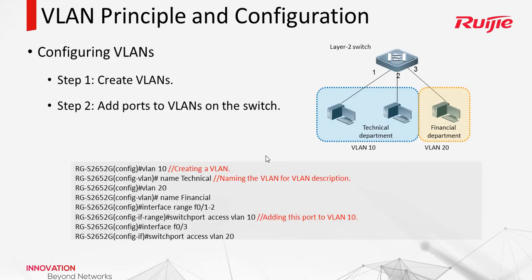So we need to configure the VLANs first. Step 1: create VLANs using the command 'vlan 10' on the global view. Then we can add a name, for example 'name technical' as a description. Then configure VLAN 20 for the financial department.